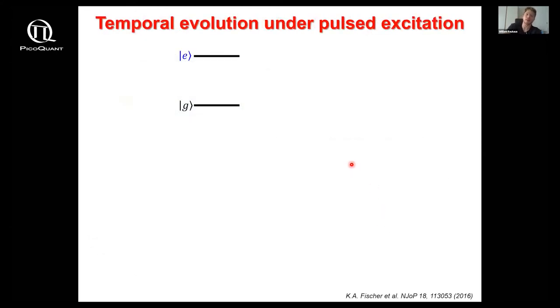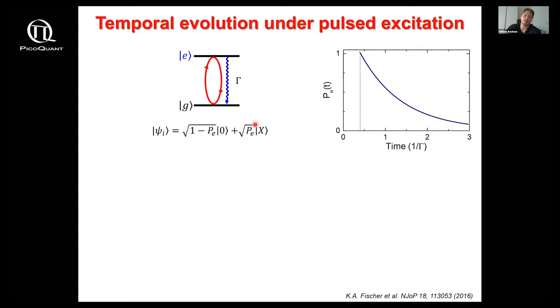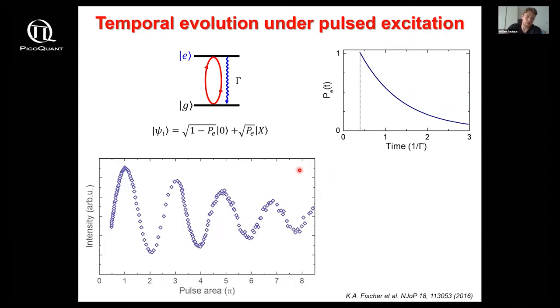Let's take a look at the temporal evolution of such a two-level system under pulsed excitation. When we drive that with a short laser pulse, we can prepare it in a superposition of its ground and excited state. After the pulse has been absorbed, the remaining system dynamics are essentially just governed by spontaneous emission, which means that we get this emission probability that decays exponentially with time. One popular mechanism to prepare the system in the desired state is the optically driven Rabi oscillation.